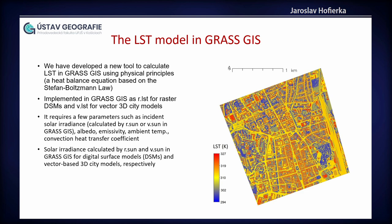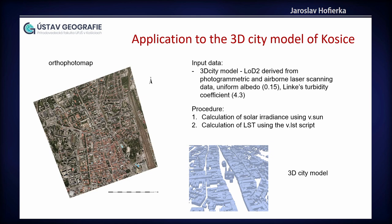In this picture you can see the 2D version of LST calculation, a model that is calculated for urban data. Here I want to show you examples of how LST can be calculated for a 3D model. You can see on the left our study area, a sample of the 3D model. The procedure is quite simple: first you calculate solar irradiance using V.sun, and then using the V.LST script you can calculate LST values.